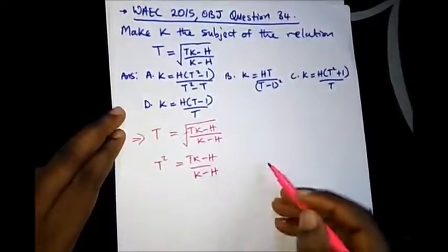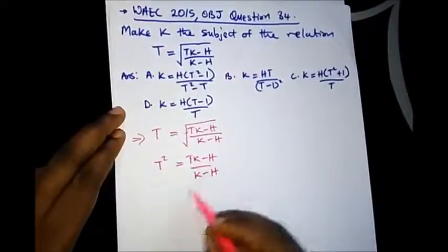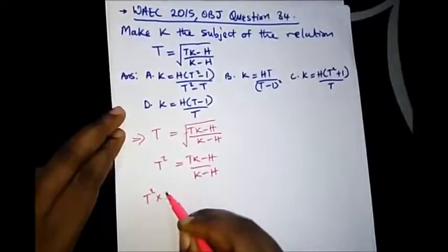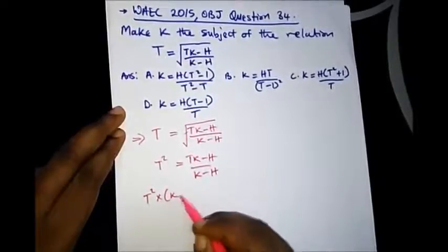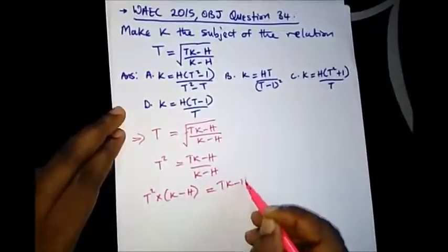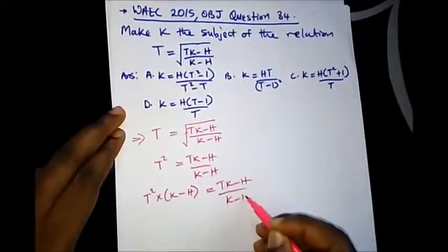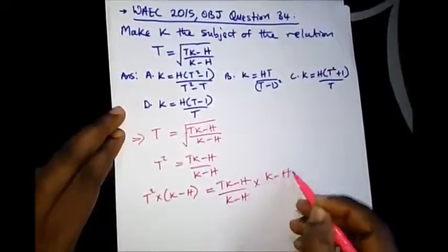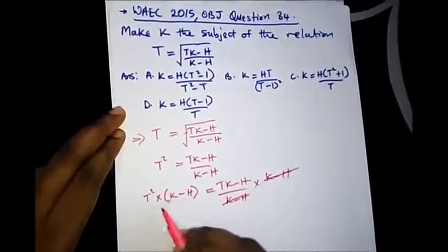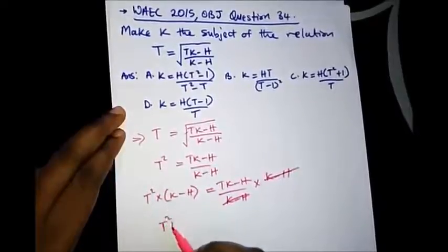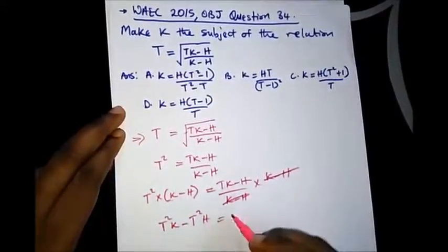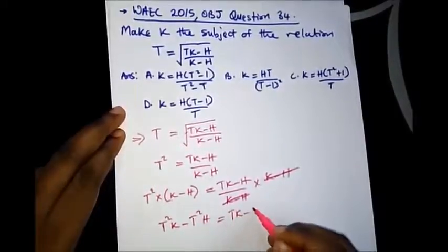From here, multiply both sides by K minus H. So we have T squared bracket multiplied by K minus H equal to TK minus H, and the K minus H cancels. Let's open this bracket: we have T squared K minus T squared H equal to TK minus H.